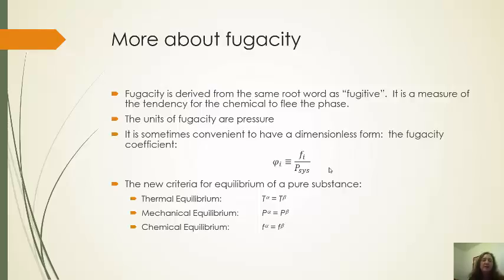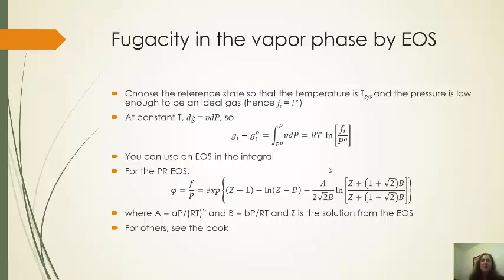So now, if I accept this, then what this tells me is that my equilibria criteria are, thermal equilibrium means that the temperatures of the two phases are the same. Mechanical equilibrium means that the pressures in the two phases are the same. And chemical equilibrium means, well, it could mean that Gibbs energies are the same, but it also could mean that the fugacities are the same in the two phases. And mathematically, this last form is the most useful.